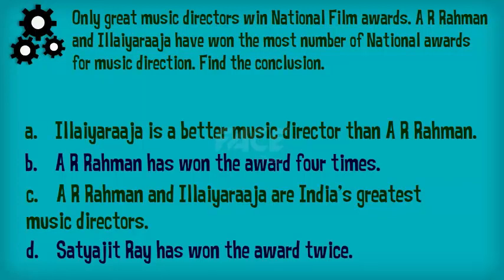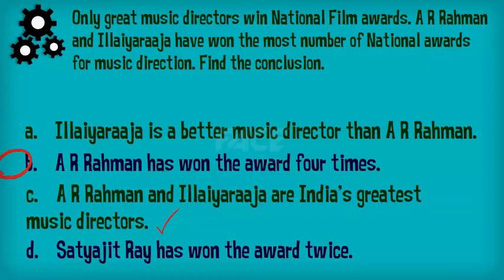From the given argument, A. R. Rahman and Ilya Raja have won the most number of national awards, and only great music directors win national film awards. Thus, it can be logically concluded that both of them are great music directors, which is stated in option C. Options A and D are irrelevant to the argument. Option B is relevant to the argument, but it is not something that can be logically derived from the given statement.